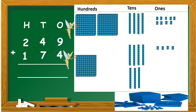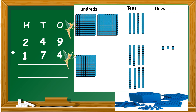So, we are going to trade our 10 ones for 1 ten. Count with me: 1, 2, 3, 4, 5, 6, 7, 8, 9, 10. We take our 10 ones and we trade it for 1 ten. What do we have remaining in the ones column? We have 3 ones remaining in the ones column.